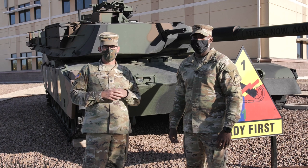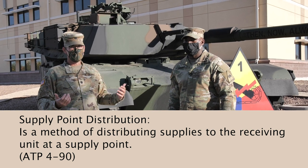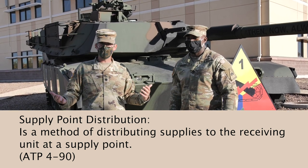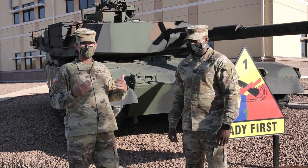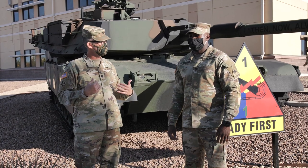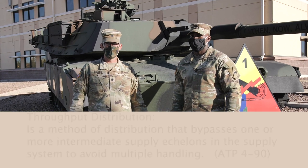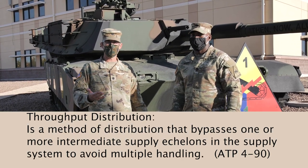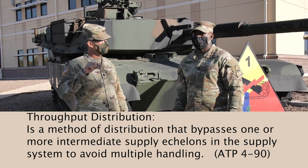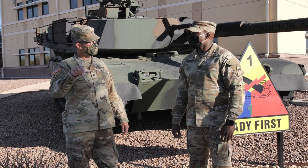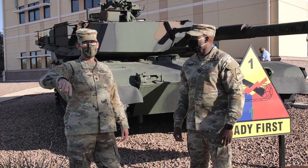The other method, supply point distribution — an example of that is the CTCP. A lot of times we'll leave an emergency resupply at the CTCP. In that case, the unit can come to the CTCP, put the material on their own assets, and take it back to their unit on their own. And then lastly we have throughput. Throughput distribution is when the BSA or the BSB configures loads inside the BSB and then delivers them directly to the supported unit without utilization of the FSC — they skip an organization, hence the name throughput.